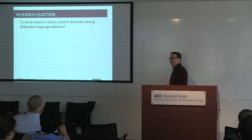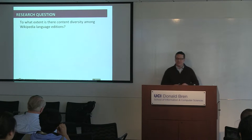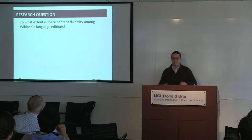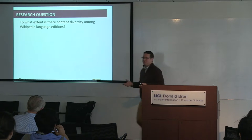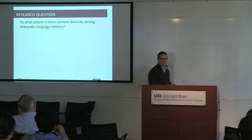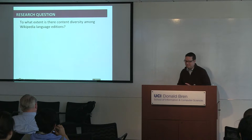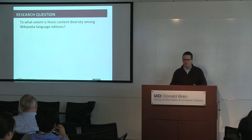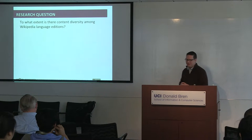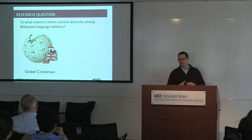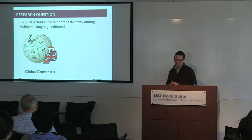We started this about five years ago. I thought it was a really simple question: to what extent is there diversity in the content represented across Wikipedia language editions? I thought it would be a two or three month project. Five years later, we're still trying to answer it. I'm going to use a device to simplify the argument — it's a bit of a false dichotomy, so hopefully you can follow along as we tie it together.